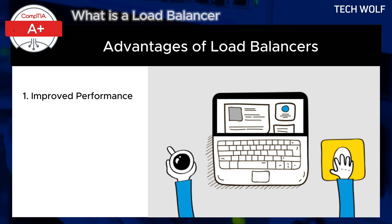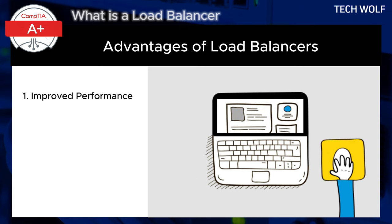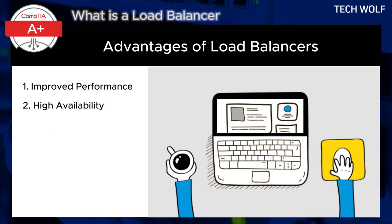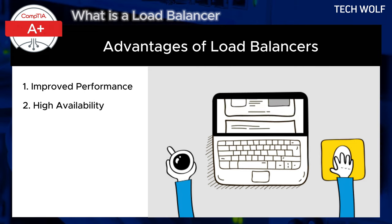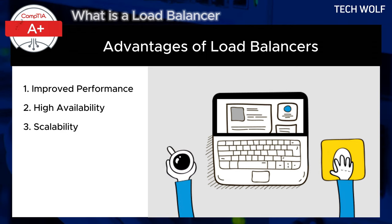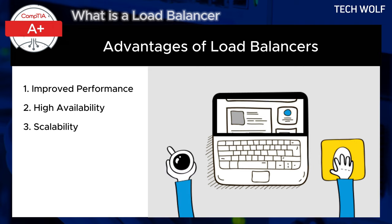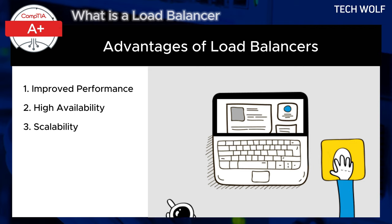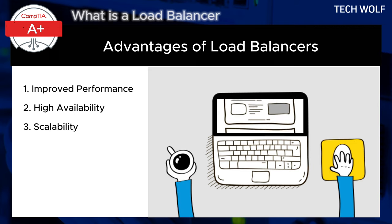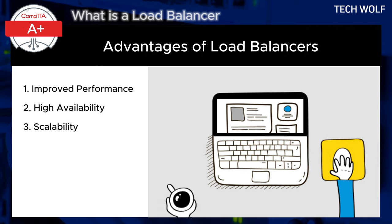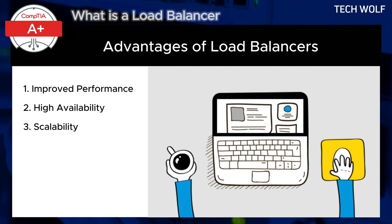Here are the advantages of load balancers. Improved performance distributes the load, preventing any single server from becoming overwhelmed. High availability provides redundancy — if one server fails, traffic is automatically redirected to other servers. Scalability enables the network to handle more traffic by adding more servers, allowing smooth scaling of resources as demand grows. In summary, a load balancer optimizes traffic distribution, enhances availability, and provides flexibility for scaling resources efficiently. Load balancers are key components in ensuring reliable, scalable, and responsive network environments.